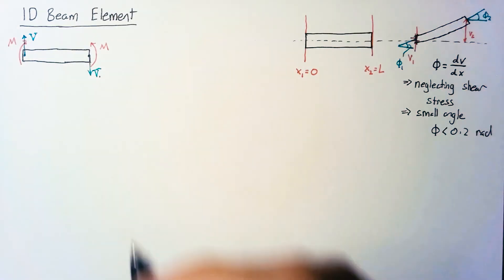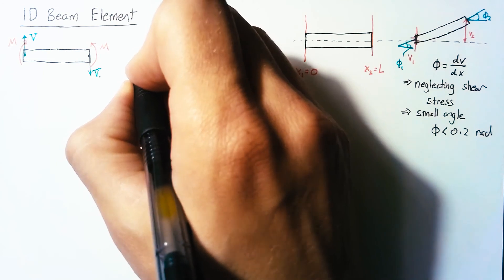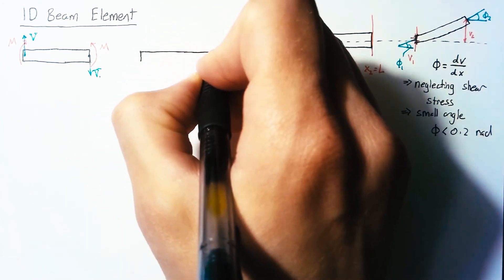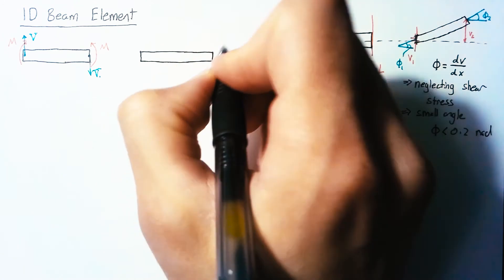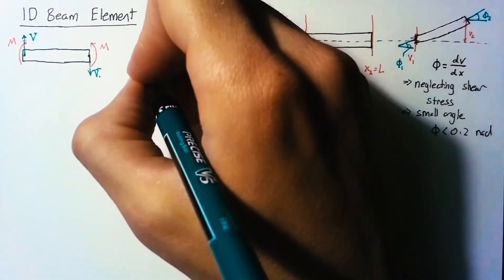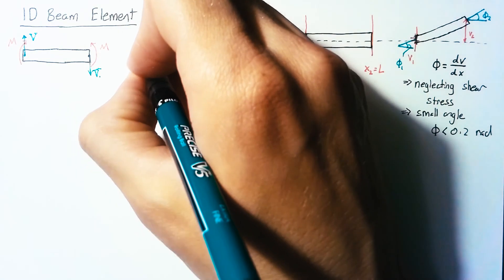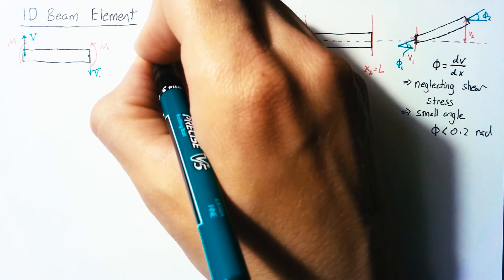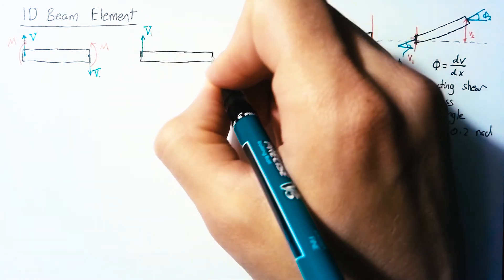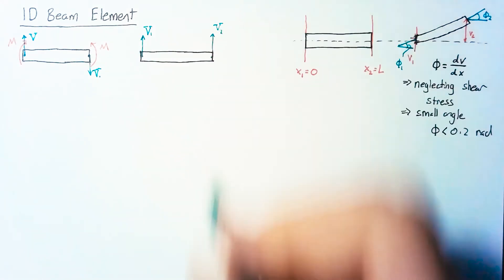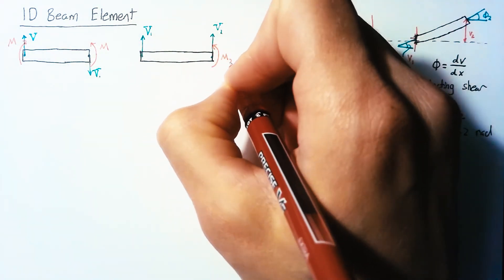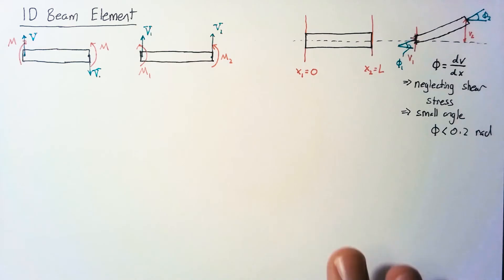When we're creating our beam element, we want everything to be positive, because when we sum everything together it makes life easier. So we're going to have a positive shear force on the left v1 and a positive shear force on the right v2. Likewise, both of our moments are going to be positive. So now we have everything defined that we need for our force vector.